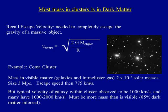A galaxy cluster, or cluster of galaxies, is a structure that consists of anywhere from hundreds to thousands of galaxies that are bound together by gravity, with typical masses ranging from 10^14 to 10^15 solar masses. They are the largest known gravitationally bound structures in the universe and were believed to be the largest known structures in the universe until the 1980s, when superclusters were discovered.